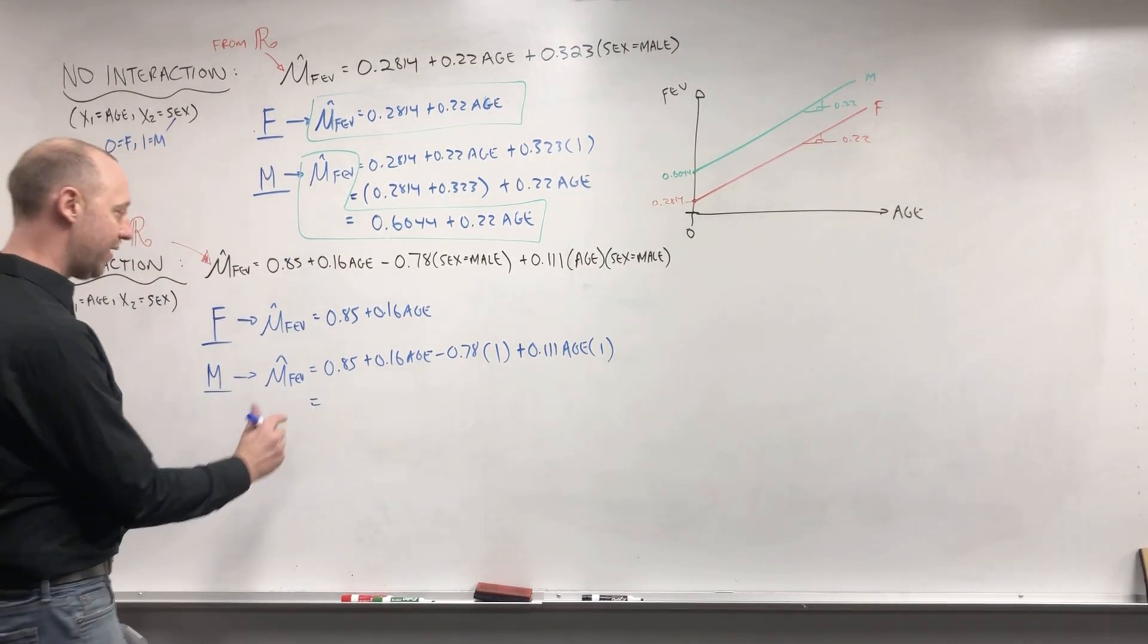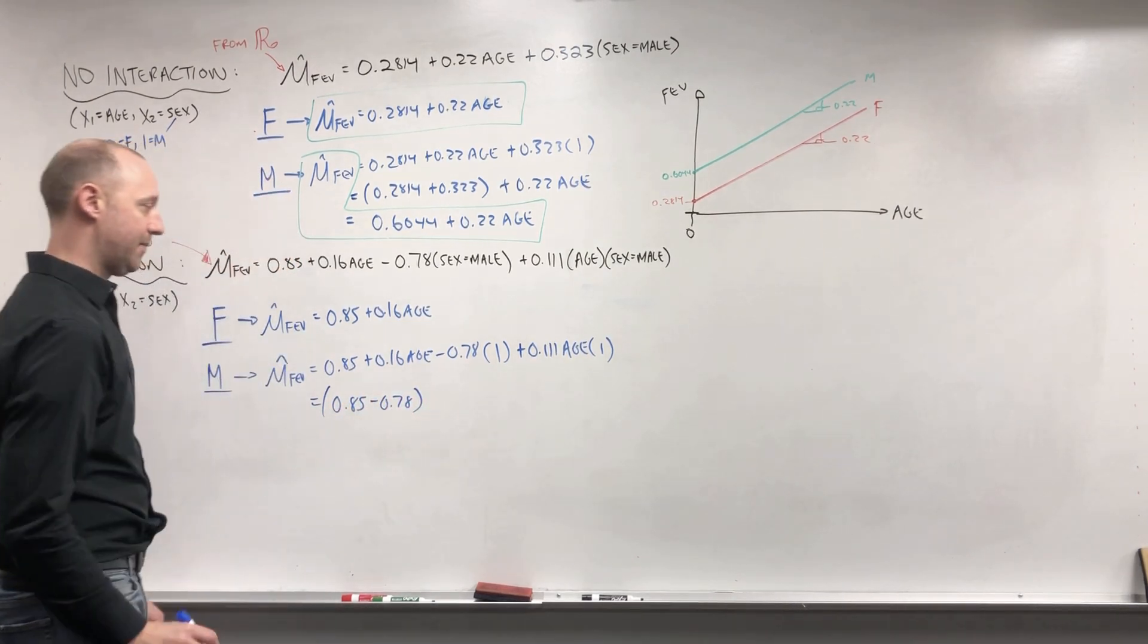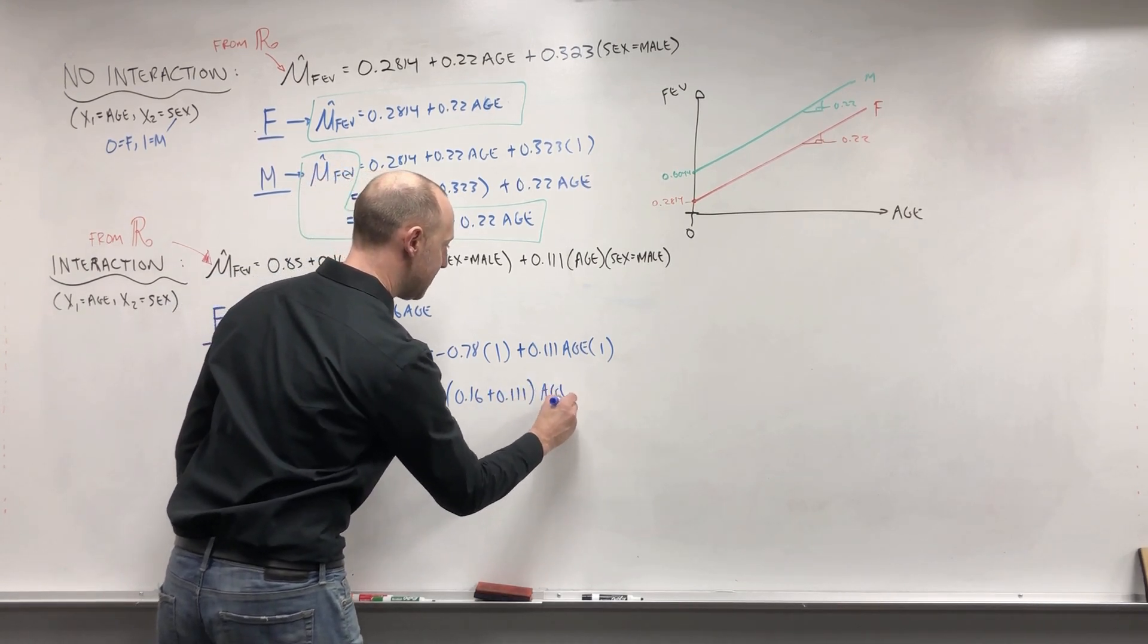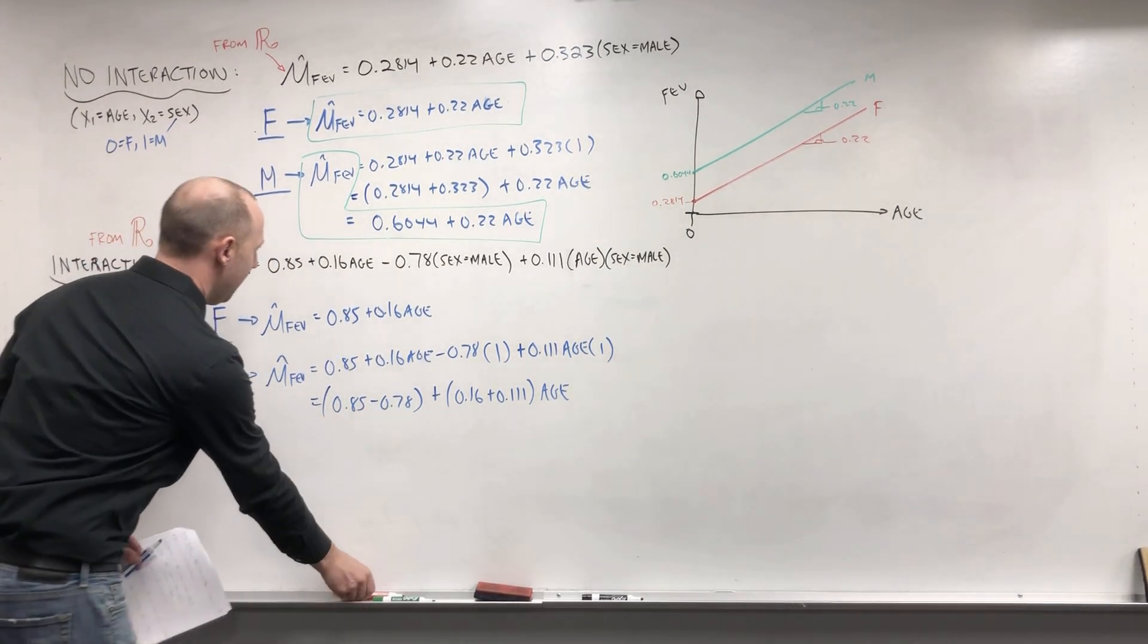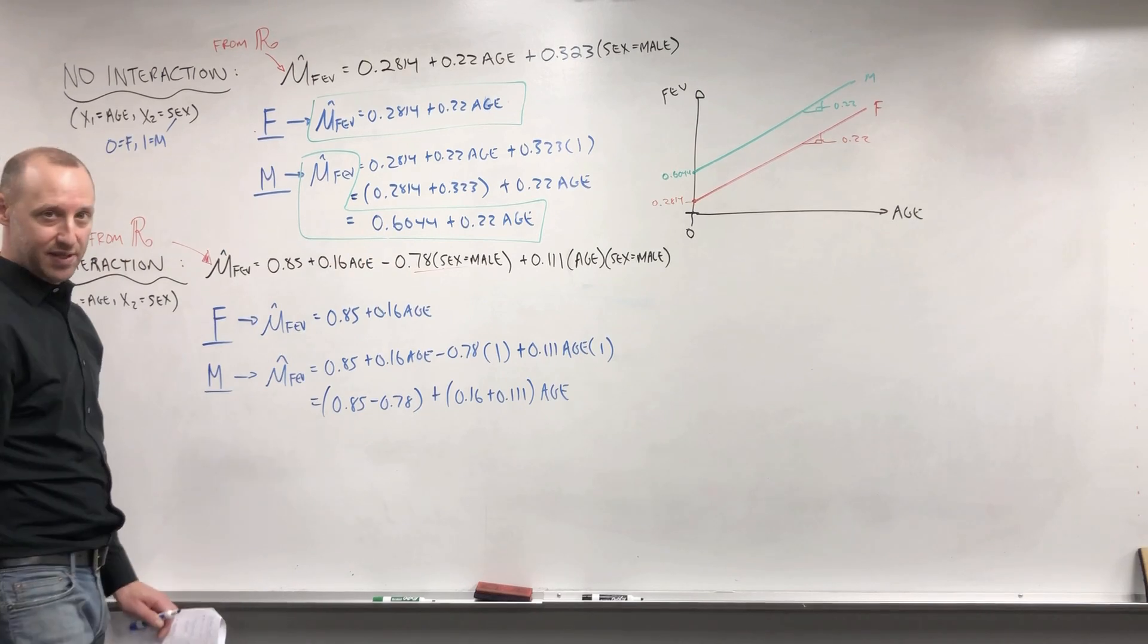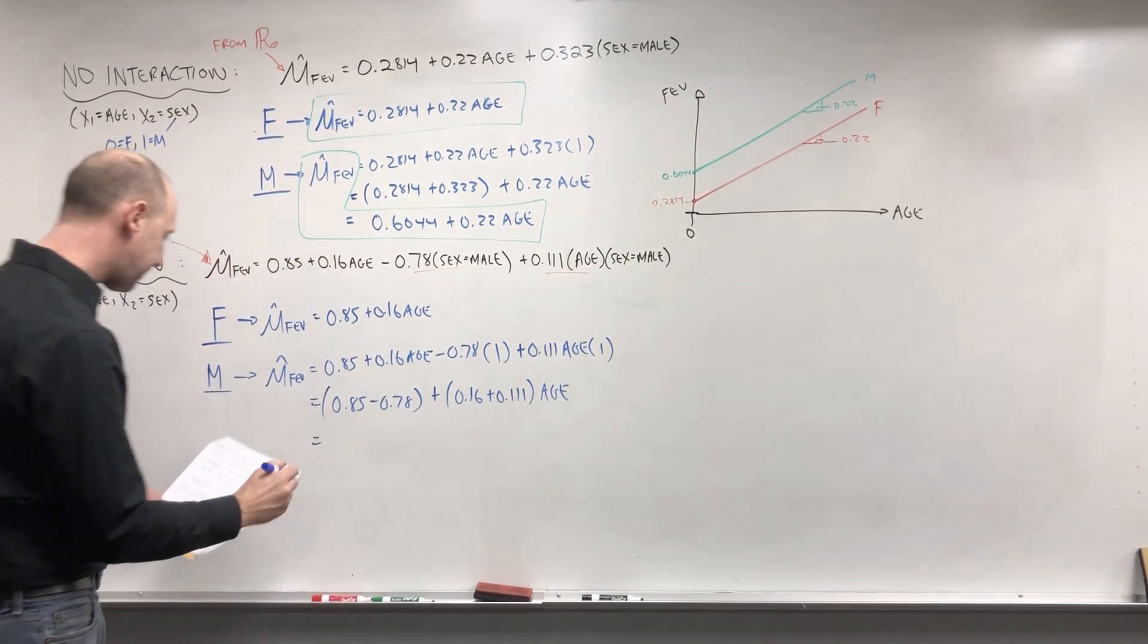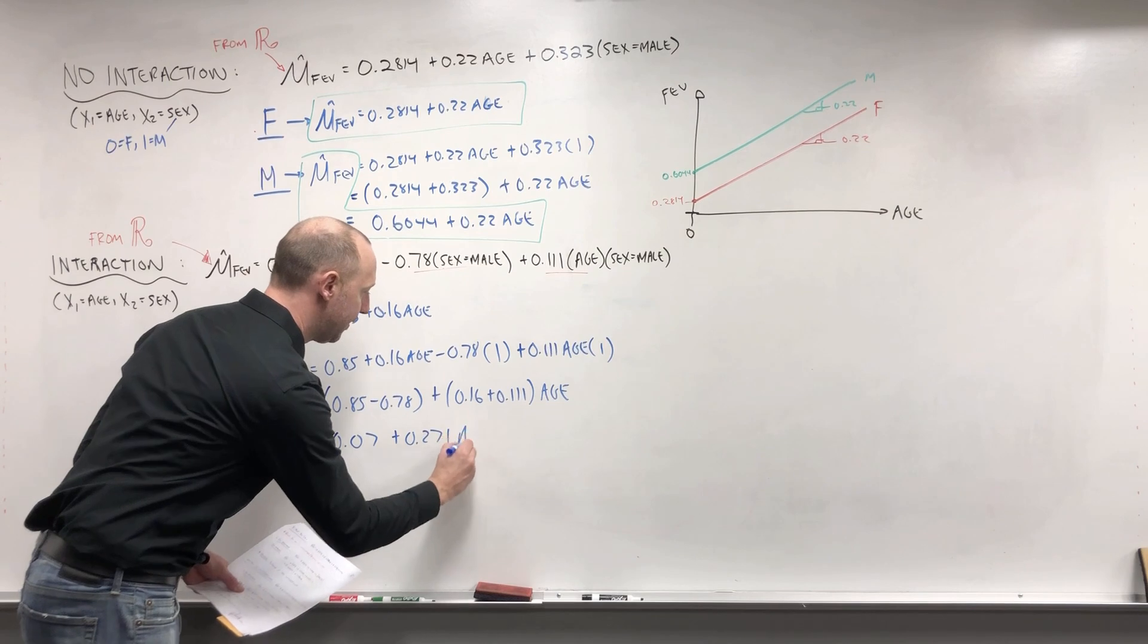And now again, the extra step I'm going to write out: 0.85 minus 0.78. Right? These are both the constant terms plus 0.16 plus 0.111 times the age. And the reason I wanted to group these is I've often thought about it one way: you can think of this term here as being the adjustment that's done to the intercept and this term here as the adjustment that's done to the slope. If you work those out, 0.07 plus 0.271 times the age.